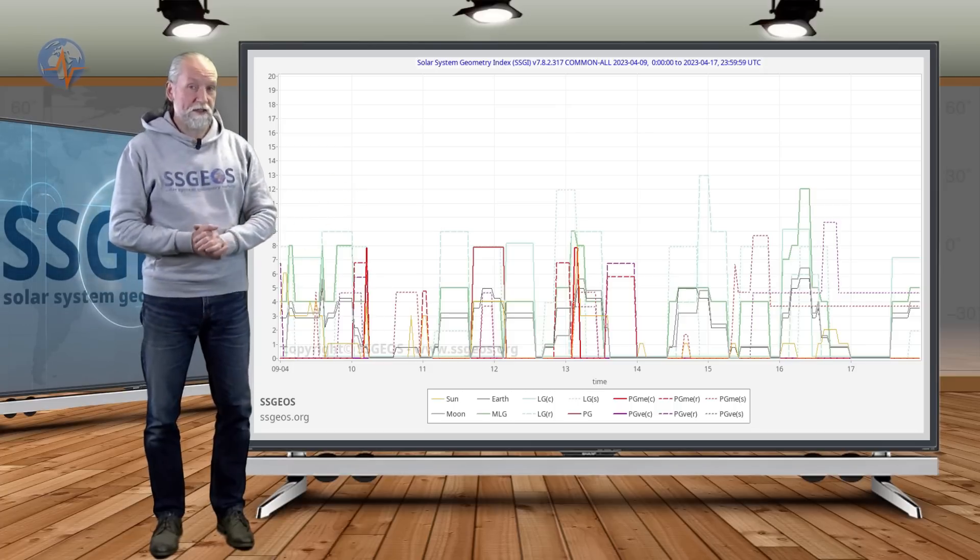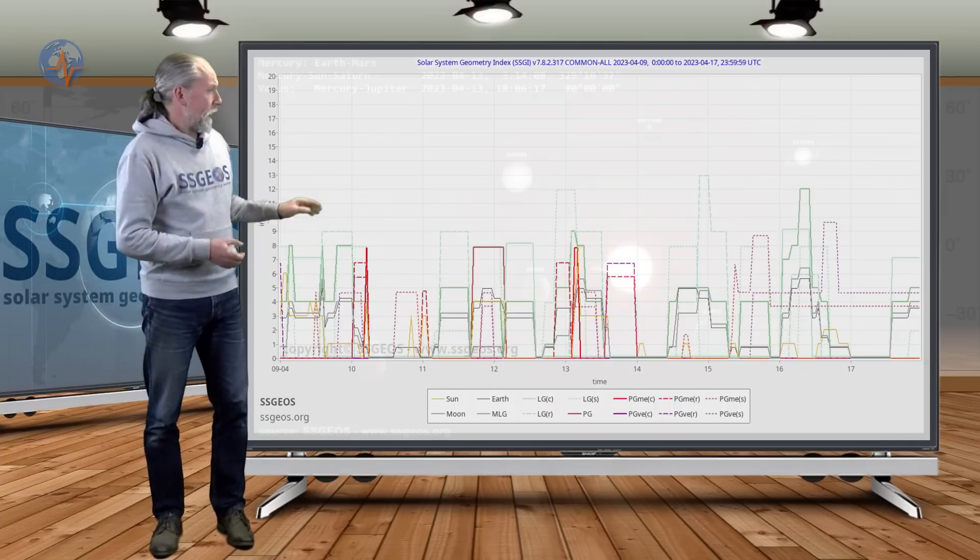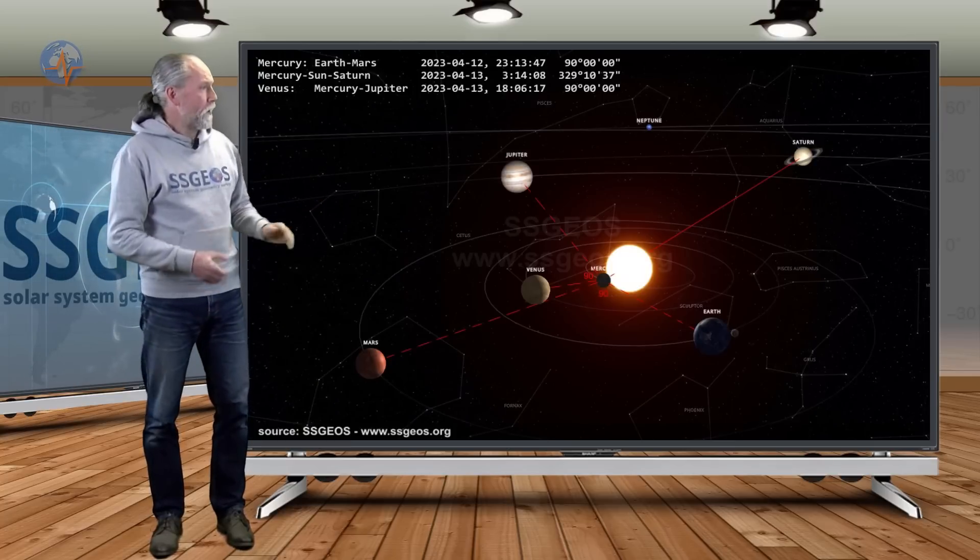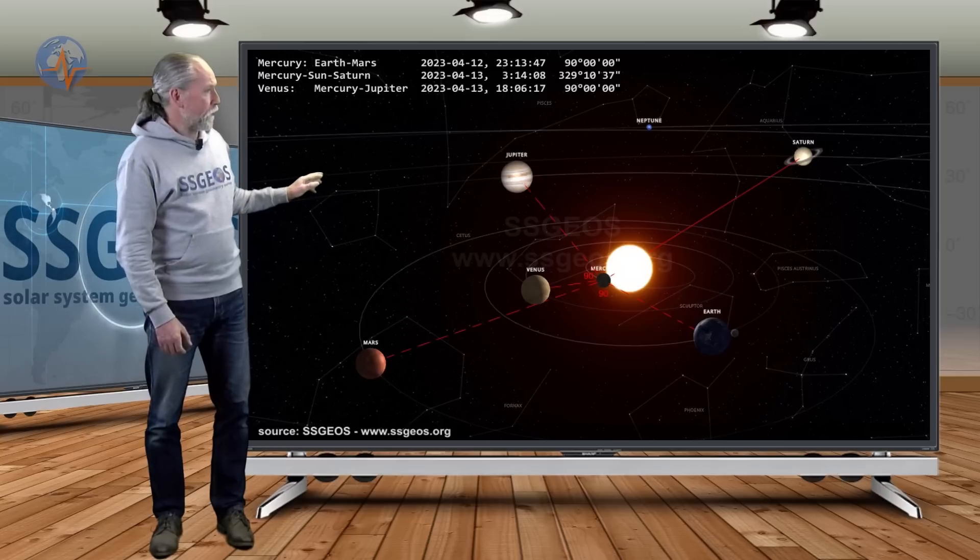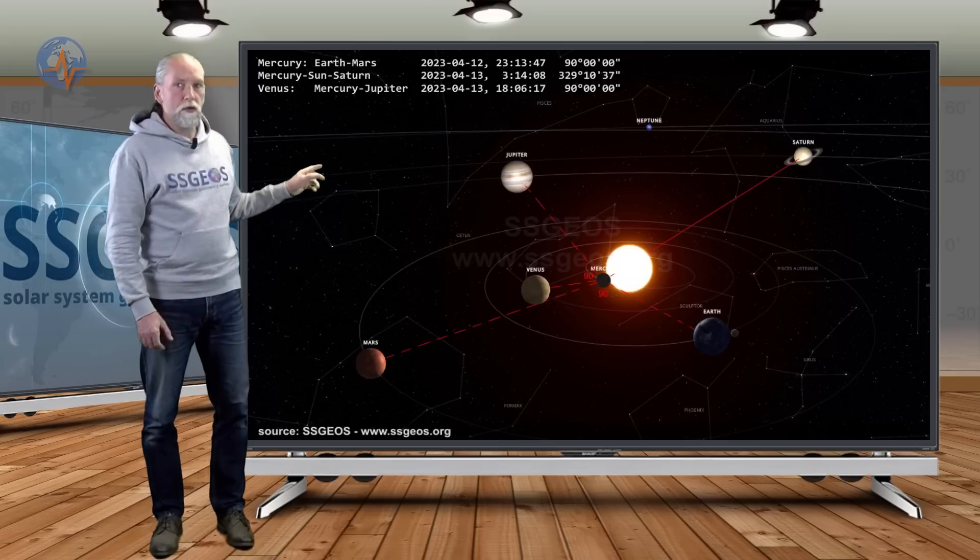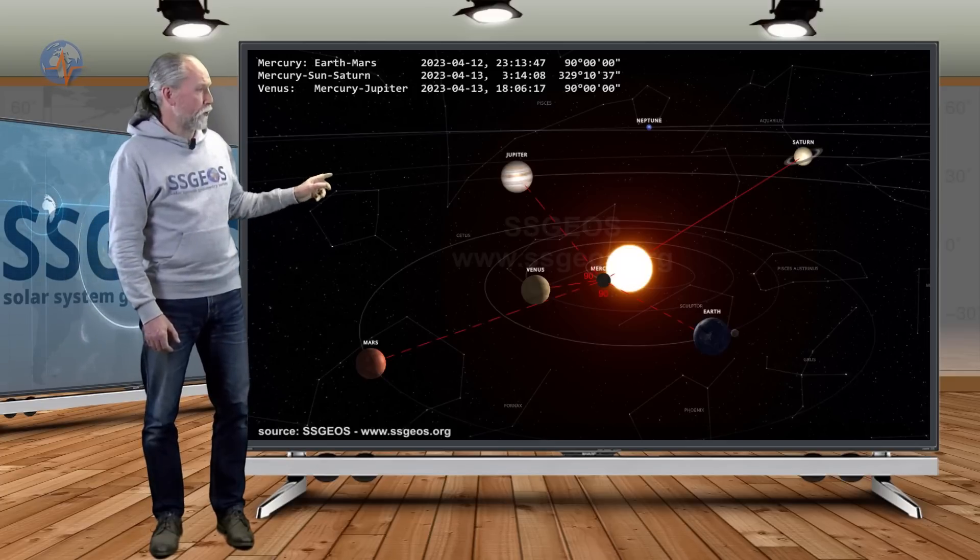Mercury is really at the center at this time. And if we look at the solar system real quick, we can see the red lines, the Mercury-Sun-Saturn conjunction that happened early this morning, and we also see two 90-degree angles involving Mercury.